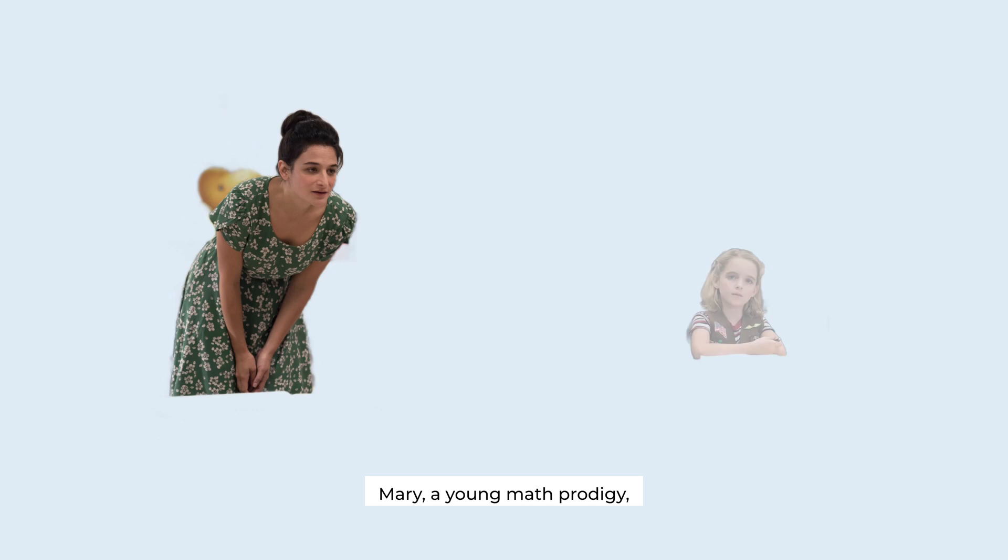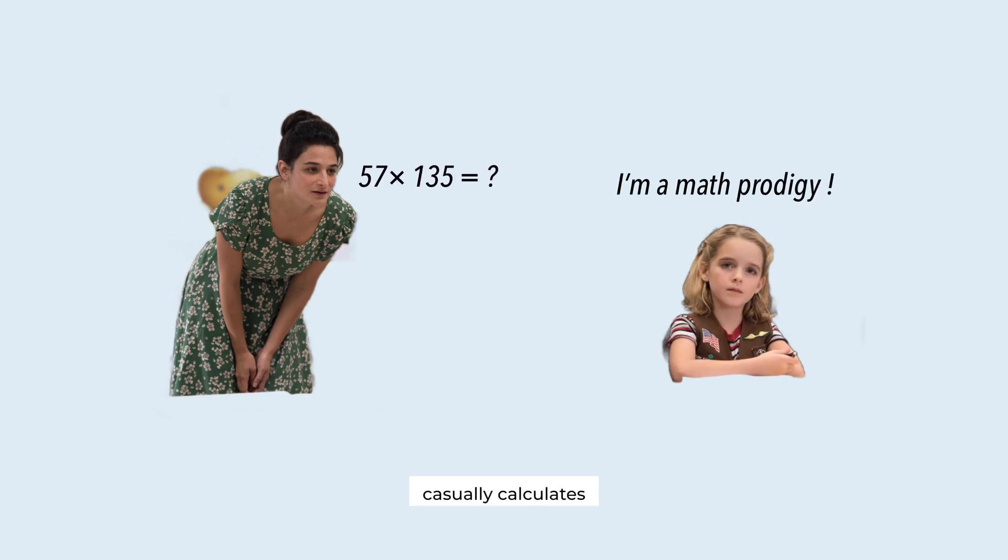The square root is 87.7 and change. This is a scene from the movie Gifted. Mary, a young math prodigy, casually calculates 57 times 135 in her head. And then, without anyone asking, she goes on to spit out its square root.